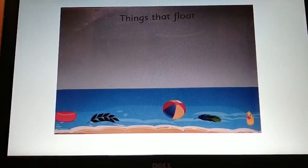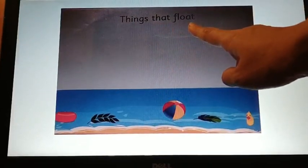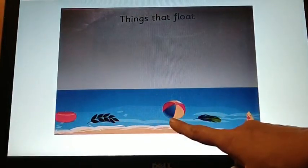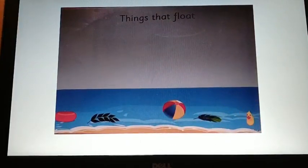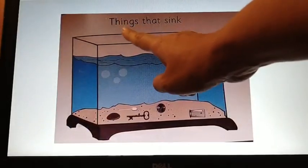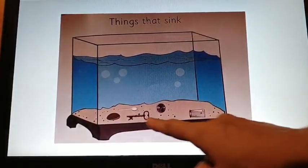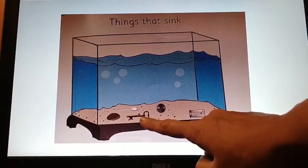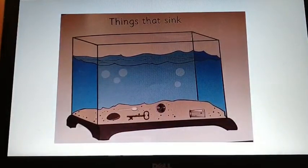Now, we will see few objects which float. And the sentence written on this page, we will read together. Things that sink. What all you can see here? A glass, a coin, a key — which are all very heavy, they don't float, they sink. A spoon, a stone. So you have understood the things which float and which sink.